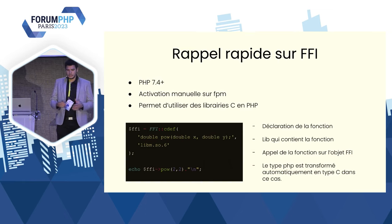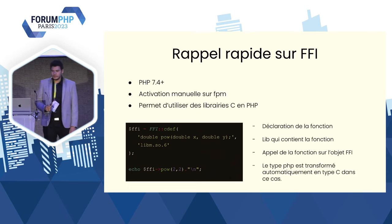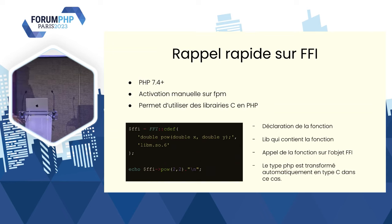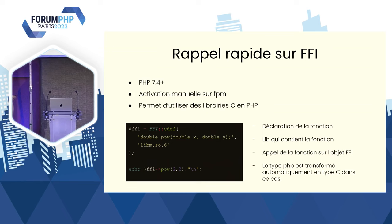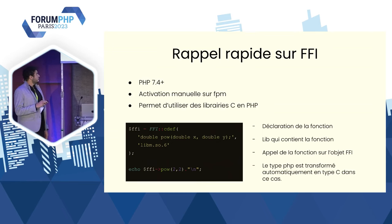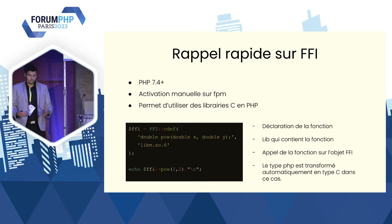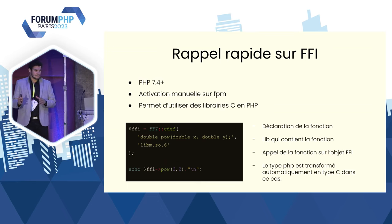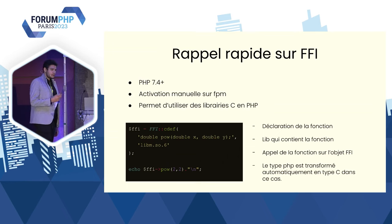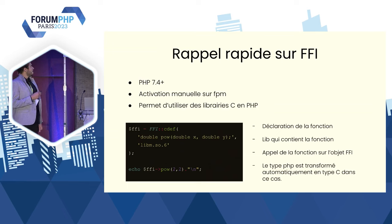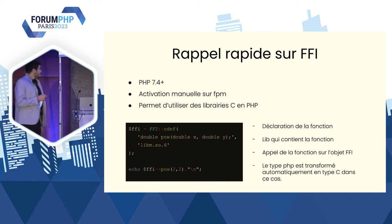FFI, c'est une extension de PHP intégrée depuis PHP 7.4. On va pouvoir directement exécuter des fonctions C en PHP. On va utiliser FFI de la sorte : on lui dit « j'aimerais que tu me présentes la fonction puts ». C'est une déclaration qu'on retrouve dans les fichiers header des fichiers C. Dans les fichiers header, on a les déclarations de prototype. On déclare également d'où vient cette fonction — c'est la librairie standard PHP qui va être capable de la résoudre automatiquement. Sinon, on peut mettre le chemin complet vers la librairie. Ensuite, on utilise la fonction directement sur notre objet FFI.